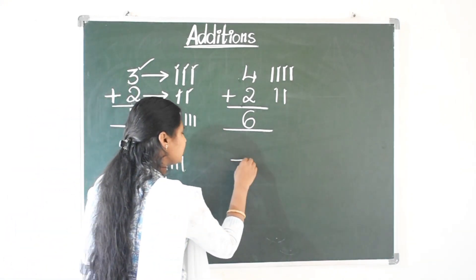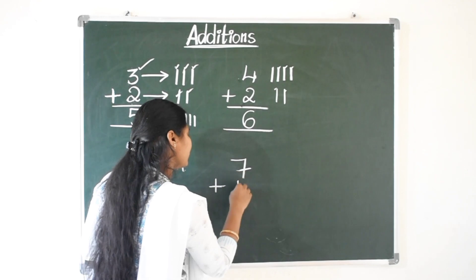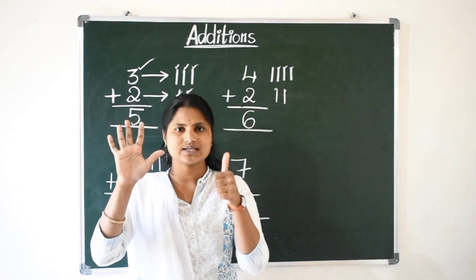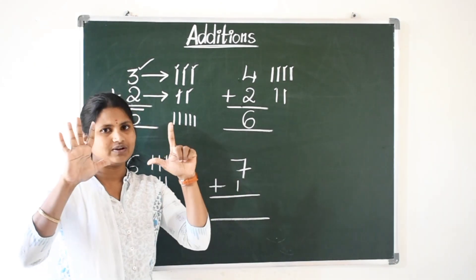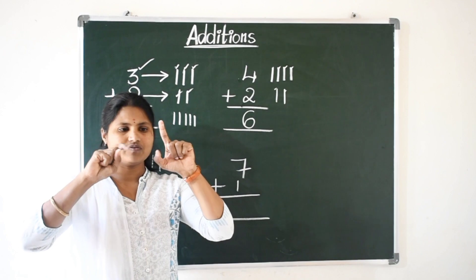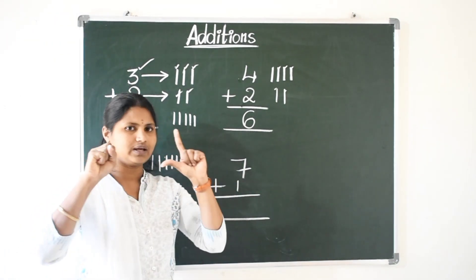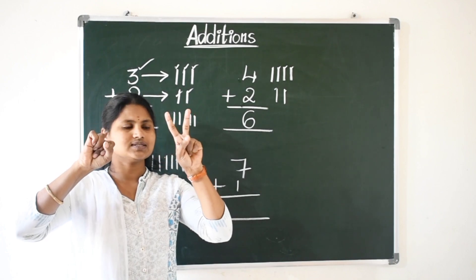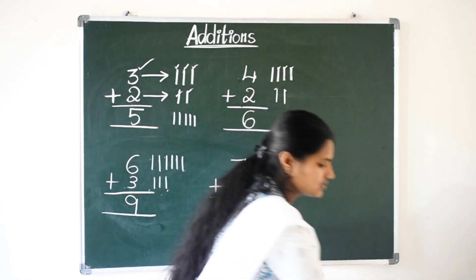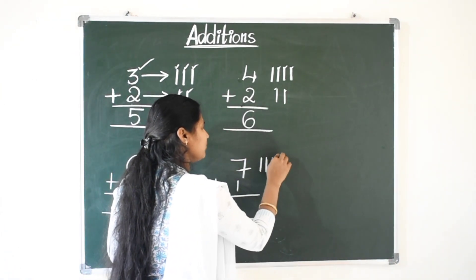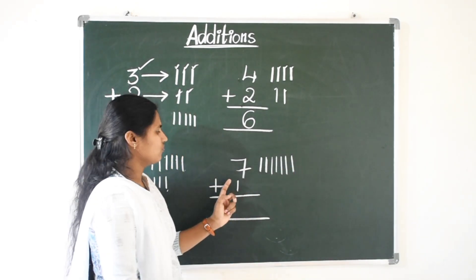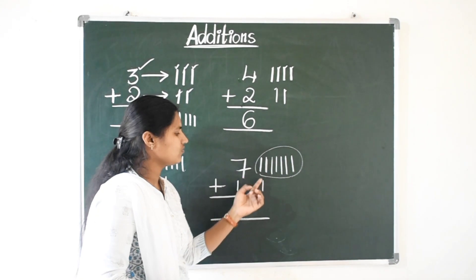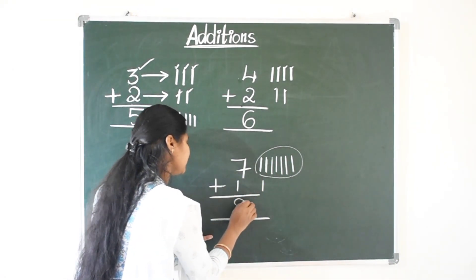Now I am writing one more example. Seven plus one. Open your seven fingers. What is the first addend? Seven. And second addend is one. Seven lines, and one means one more line. Now count all lines — seven lines, then one more line: eight. Total we got eight. Seven plus one is eight.